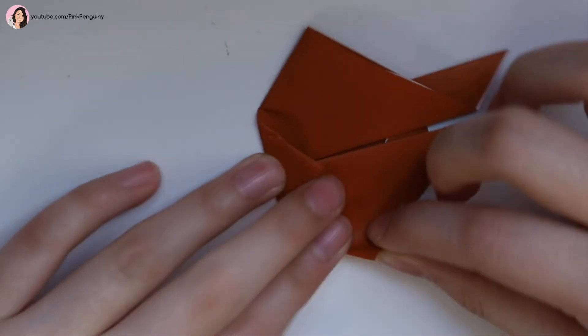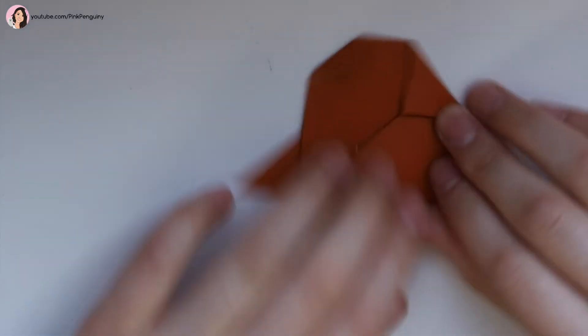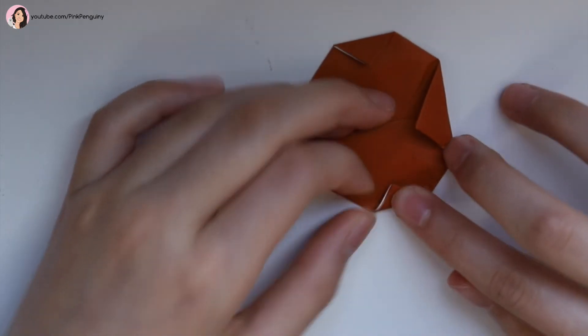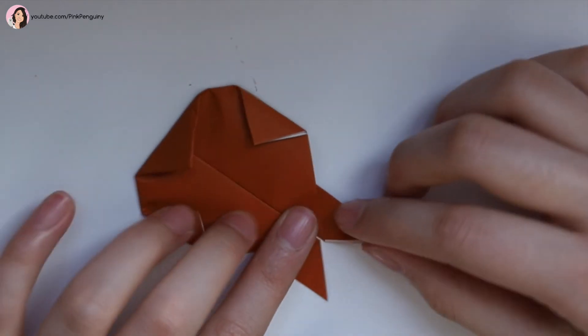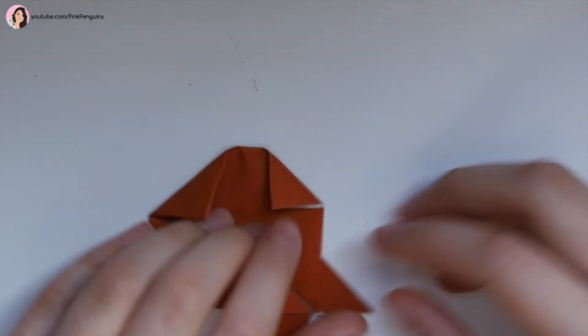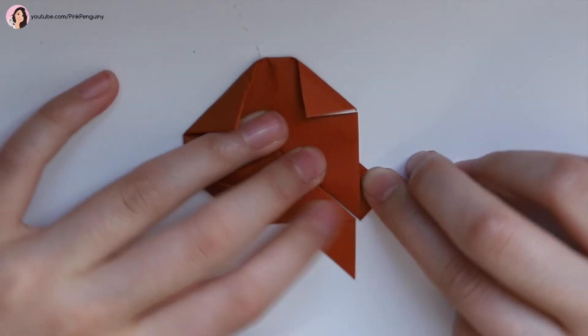And then we also fold it inward on the sides. And now the ears are really tall. So what we do is we take the tip and we fold it down against the head.